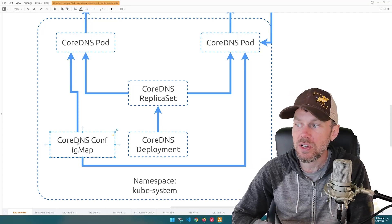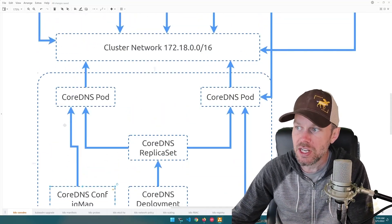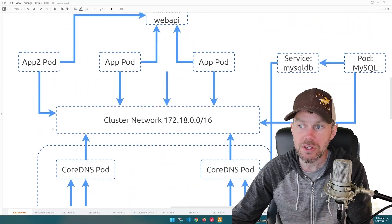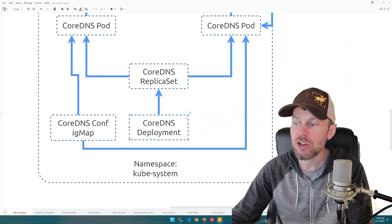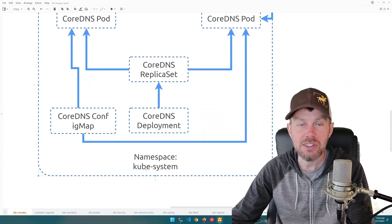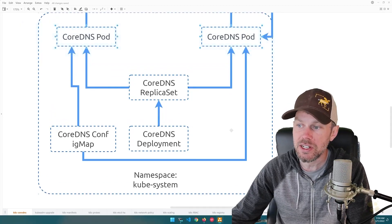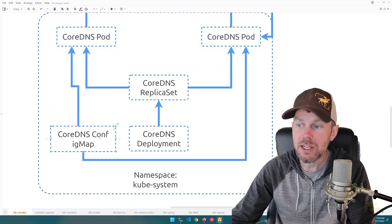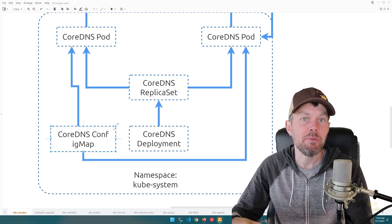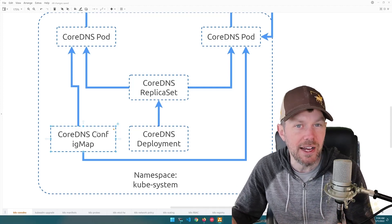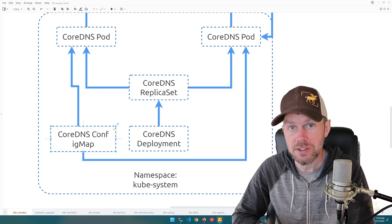In the rest of the skill, we're going to explore this architecture and understand what the cluster looks like when provisioned. We'll look at the resources created in the kube-system namespace — the deployment, replica set, CoreDNS pods, and config map — and we'll also take a look at some of the CoreDNS plugins at a high level to help you understand exactly how CoreDNS works.